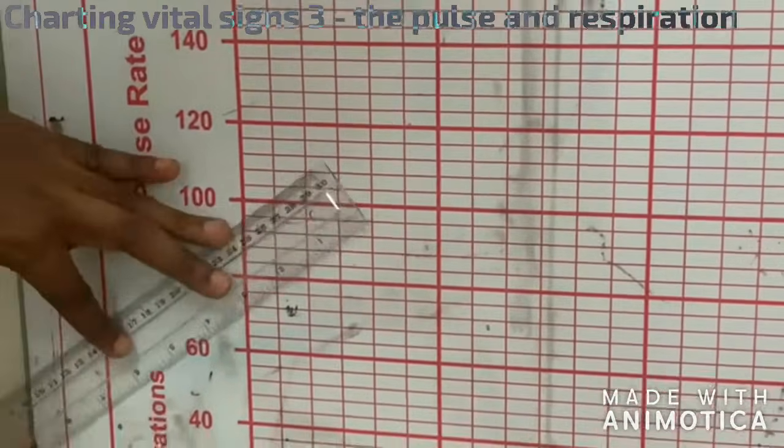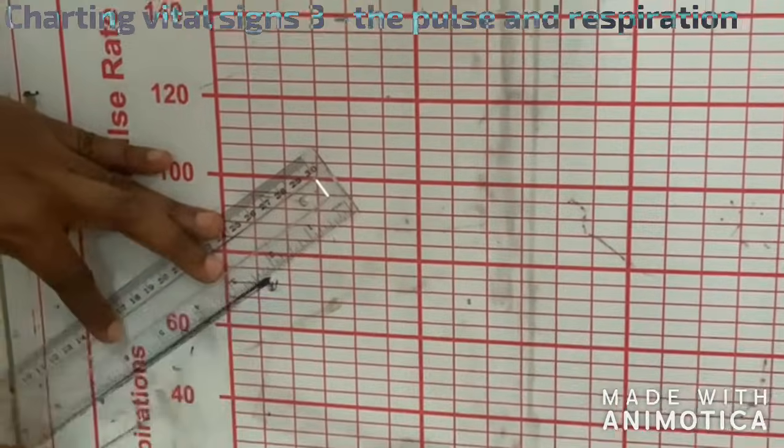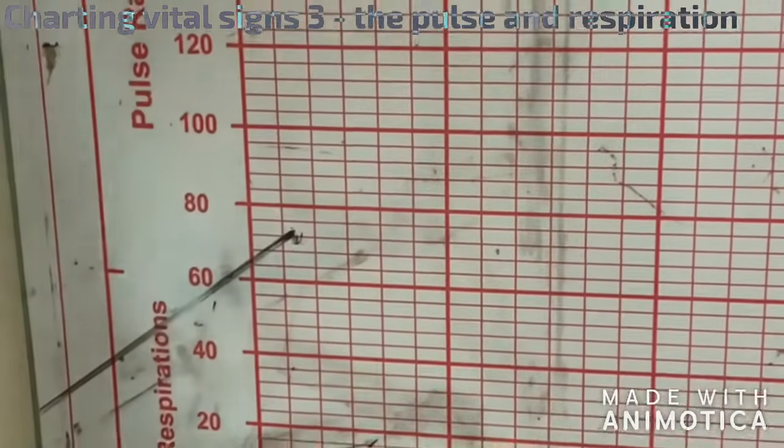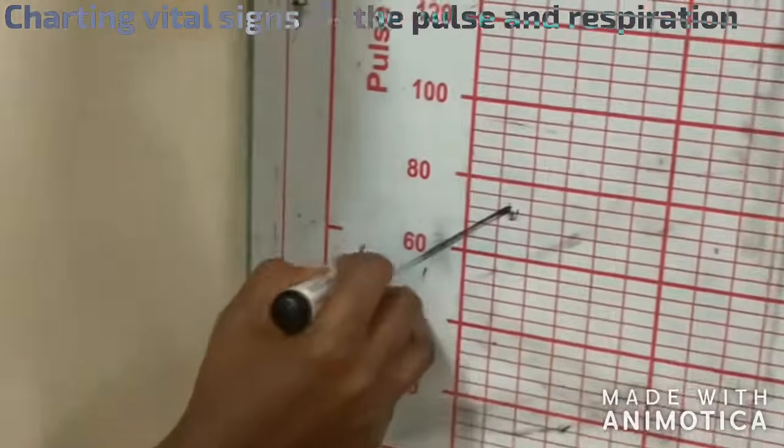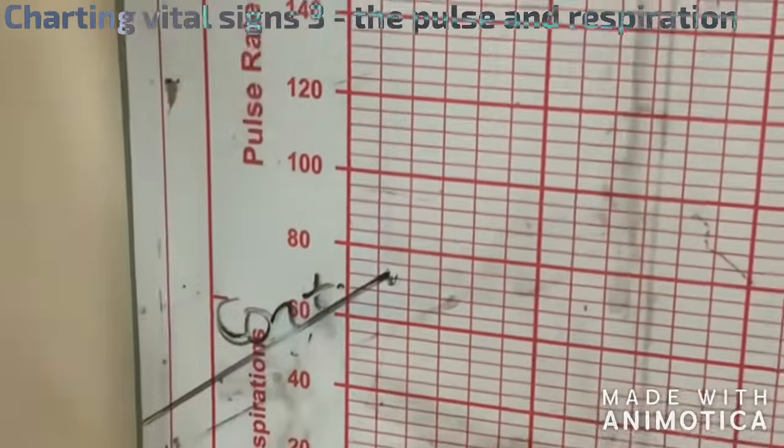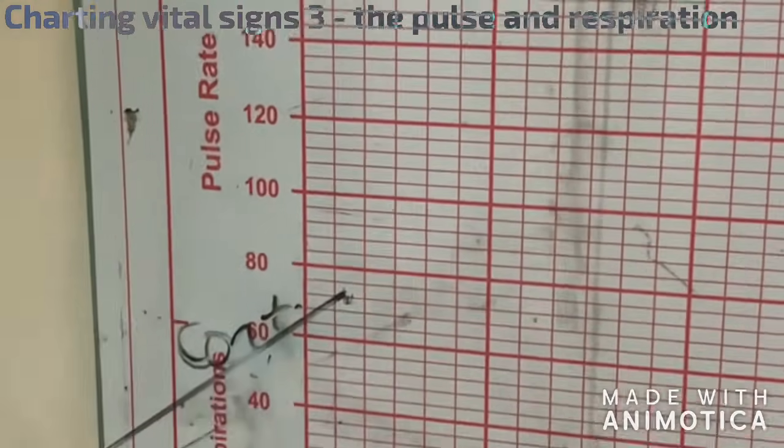Also if it's a continuation, just like the one we did for the temperature, then you write continue. If it is new admission, you write O-A, which signifies on admission.